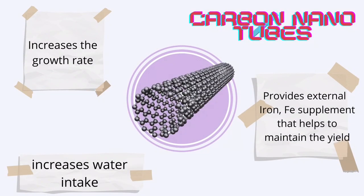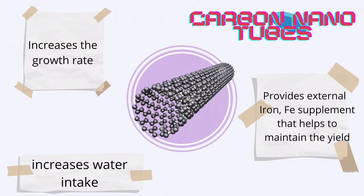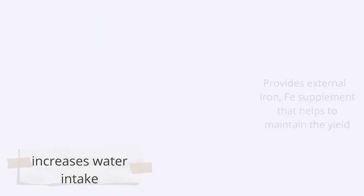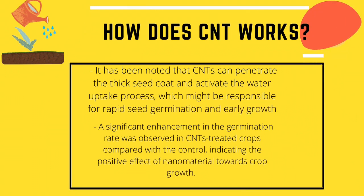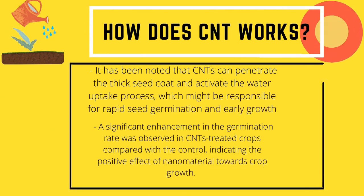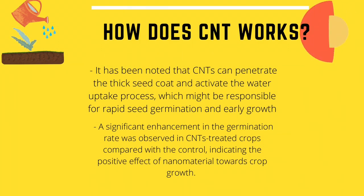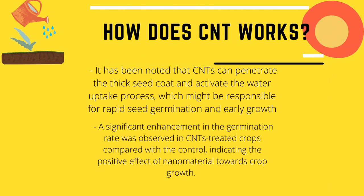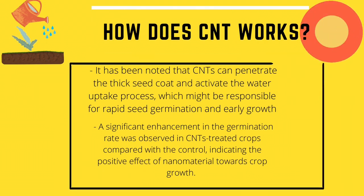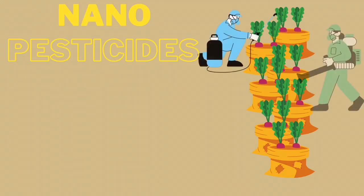Amongst all types of nanosensors, carbon nanotubes are most unique. In agriculture, carbon nanotubes are used to increase the growth rate and water intake, and to provide extra supplements to maintain yield in good condition. CNTs have a very unique structure — they can penetrate the thick seed coat and activate the water uptake process, which might be responsible for rapid seed germination and early growth. A significant enhancement in germination rate was observed in CNT-treated crops compared with the control, indicating the positive effect of nanomaterials on crop growth.